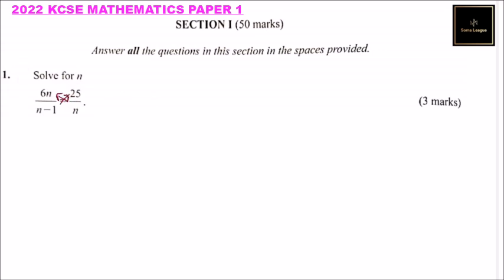So when you cross multiply, 6 multiplied by n, 6n times n will give us 6n squared, is equal to 25 multiplied by n minus 1. So this will give us 25n. We multiply 25 times n minus 25 times minus 1, that will give us minus 25.